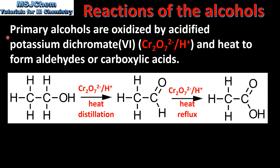The second type of reaction that alcohols undergo is oxidation. Primary alcohols are oxidized by acidified potassium dichromate and heat to form aldehydes or carboxylic acids. In this reaction we start with a primary alcohol which is ethanol; our oxidizing agent is acidified potassium dichromate. The conditions are heat and distillation, and then we produce an aldehyde.